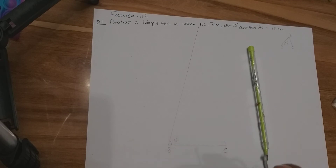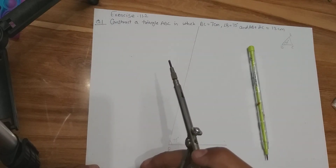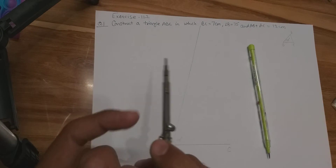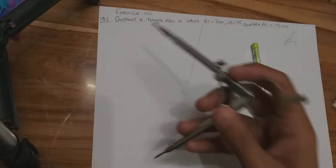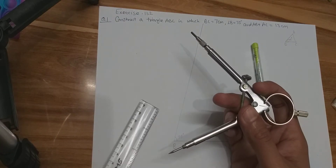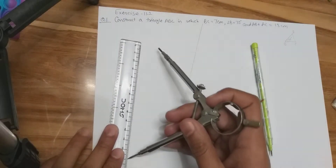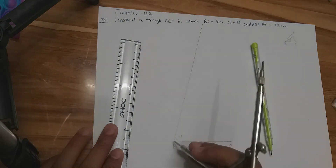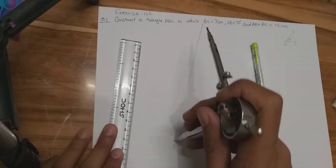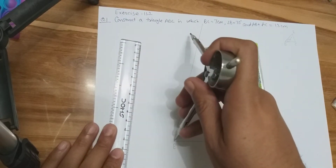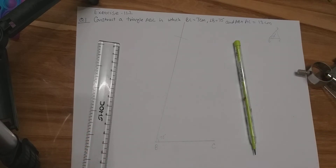Open your compass to the distance of 13 centimeters. You can see one point is at 0 and the other represents 13 centimeters. Now put your compass at point B and cut an arc on the ray of the 75-degree angle. We got an intersection point — this intersection point is point X.